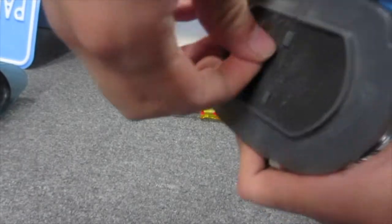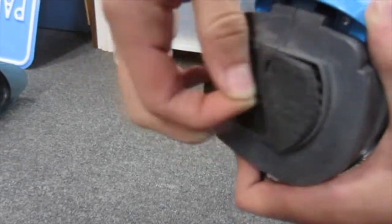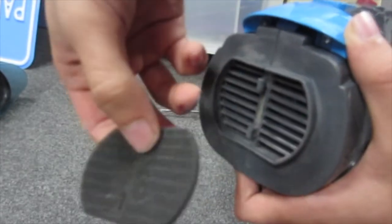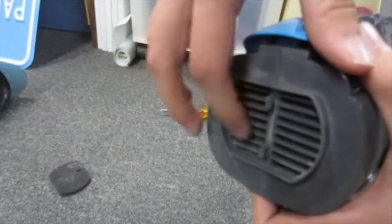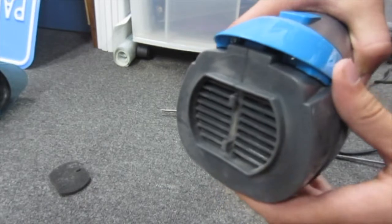So there'll be another little foam filter on here. That's more of a dust collector. Once you take that off, you'll see this grille and inside here is your actual motor.